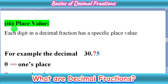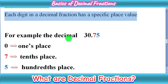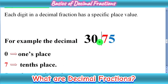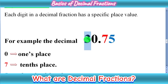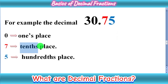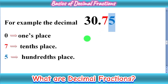Third, and very important, is place value. As you know, in whole numbers each digit has its own place value. Similarly, each digit in a decimal fraction has a specific place value. For example, we have the decimal number 30.75. On the left side of the decimal point we have all the whole numbers — ones, tens, hundreds, thousands — so 0 is at the ones place and 3 is at the tens place. After the decimal point we have different places: the first place is the tenths place, so 7 is 7 upon ten, and the second place is the hundredths place, so 5 is 5 upon hundred.